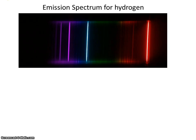Let's take a look at an actual emission spectrum. These are the four visible colors that hydrogen emits: a deep purple, a purple, a blue, and on the far right, we have a red.